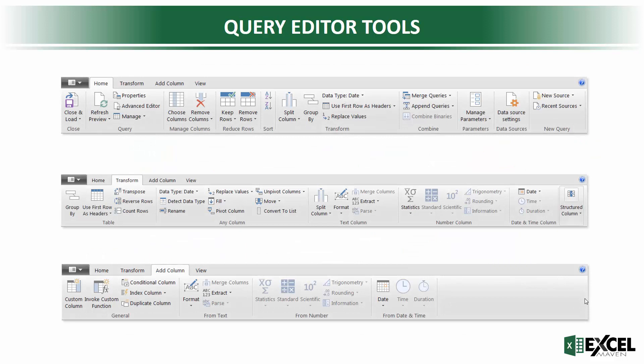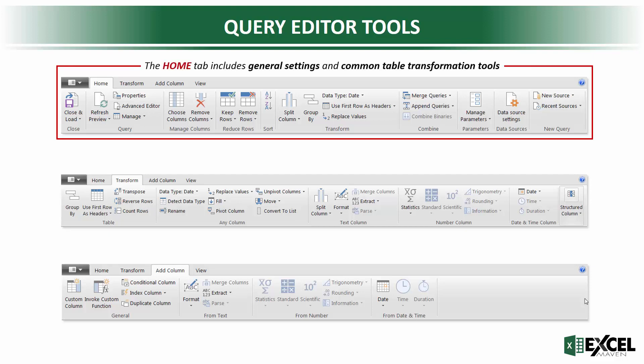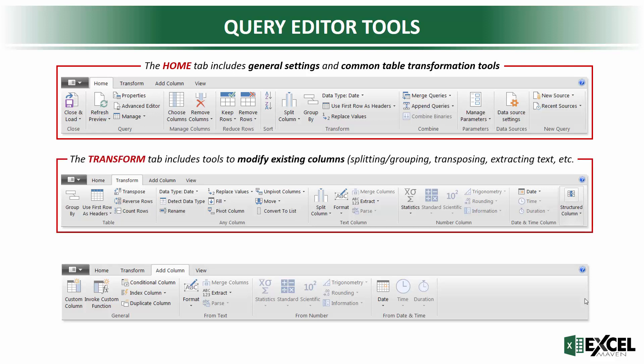Drilling into each of the three key tabs — Home, Transform, and Add Column — let's see what we've got to work with. Within the Home tab, this includes general settings and some of the most common table transformation tools: things like removing columns, removing rows, sorting or reordering things, and changing data types.